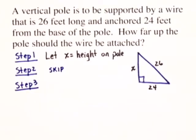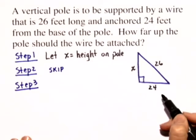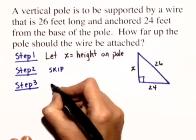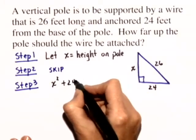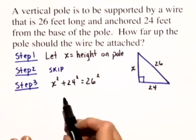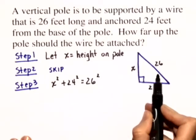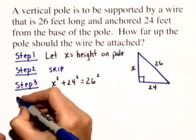In step three, we write an equation relating the unknown quantities. Well, it's a right triangle, so we'll use the Pythagorean theorem. In this case, we have X squared plus 24 squared is equal to 26 squared. Remember, the sum of the squares of the legs is equal to the square of the hypotenuse. And now we're ready to solve this equation.